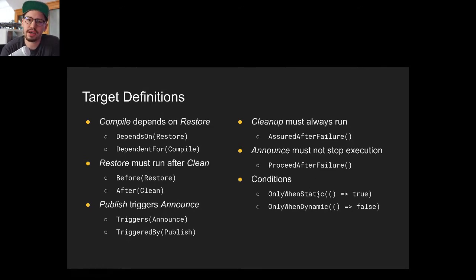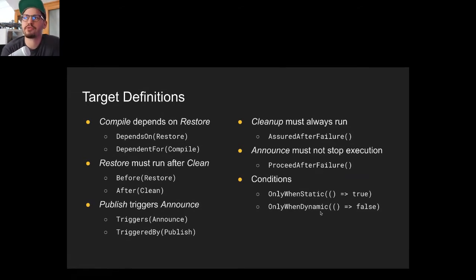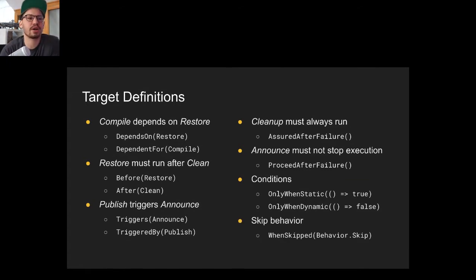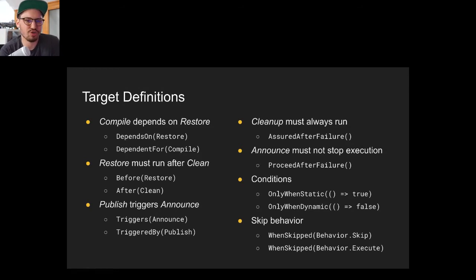You can also define conditions for whether a target should be executed. Conditions can be statically checked at build start — for instance, checking if you're running on AppVeyor — or dynamically, checking whether certain files have been created by a previous target. If conditions aren't met, the target is skipped. You can also define whether the dependencies of a skipped target should also be skipped.